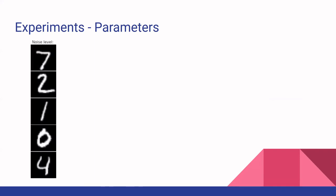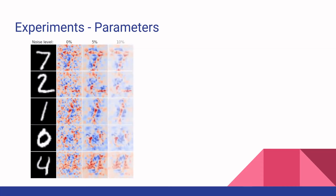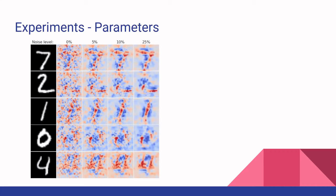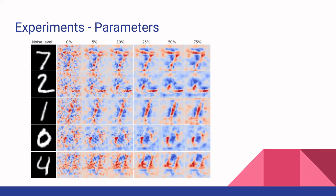They also fine-tuned the noise level for the MNIST dataset using a similar strategy, keeping sample size constant at 100 and varying the noise. At 0 percent — vanilla gradient — you see a much more cloudy, noisy image. As they increased noise, images became much more clear. About 25 percent was where many images became clearest — you could make out the one, seven, two, four, and somewhat the zero. At 50 percent noise started increasing, and at 75 percent it increased further. For MNIST, a noise level of about 25 percent was best.